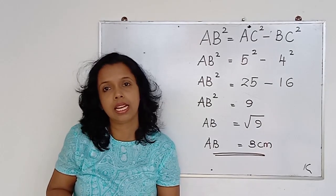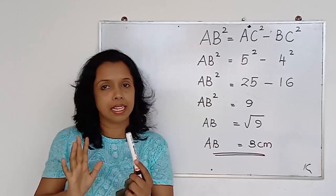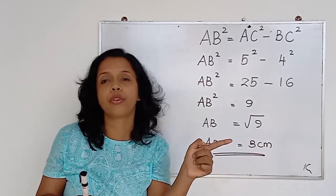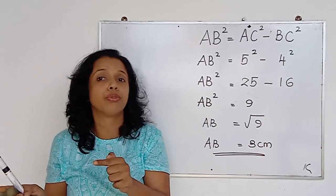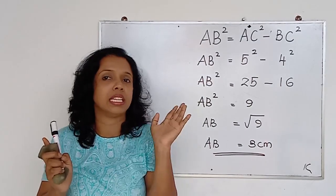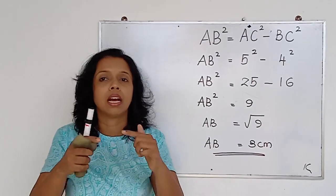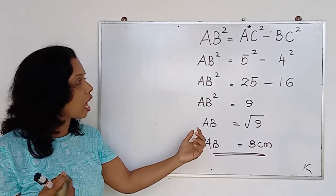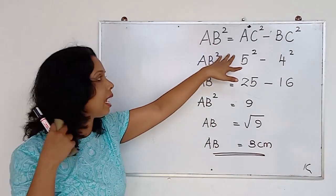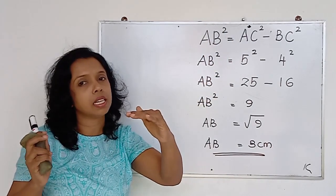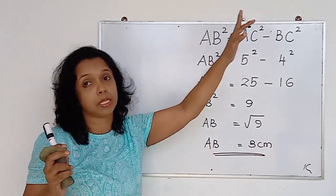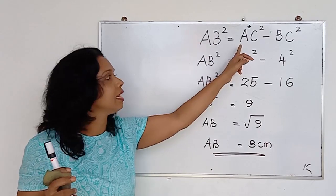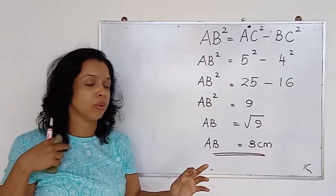So how did we find the missing figure? First, I identified this as a right-angled triangle. In a right-angled triangle, according to the Pythagoras theorem, the square of the hypotenuse equals the sum of the squares of the other two sides. The original formula is AC squared = AB squared + BC squared. Since we wanted to find AB, we rearranged it to AB squared = AC squared minus BC squared, and that is how we found the value of AB.